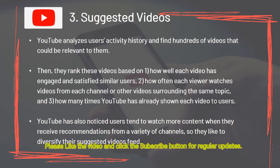3: Suggested Videos. YouTube analyzes users' activity history and finds hundreds of videos that could be relevant to them, then ranks these videos based on: how well each video has engaged and satisfied similar users; how often each viewer watches videos from each channel or other videos surrounding the same topic; and how many times YouTube has already shown each video to users. YouTube has also noticed users tend to watch more content when they receive recommendations from a variety of channels, so they diversify their suggested video feeds.